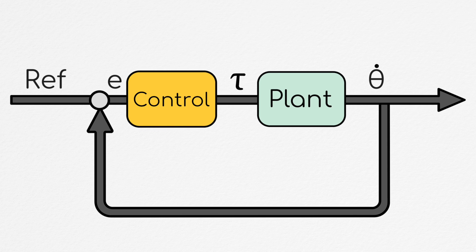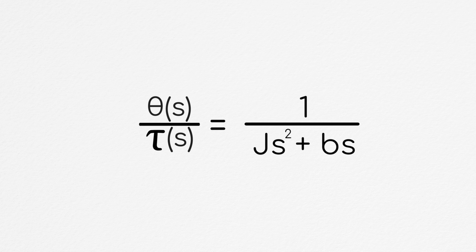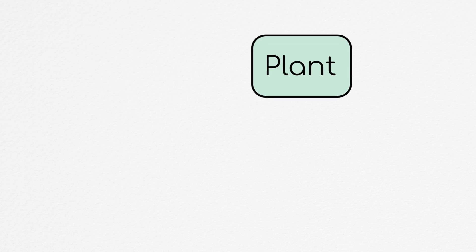However, if instead of position we wanted to control the system's velocity, our motor model would change. Where before, our system model was 1 over j*s squared plus b times s, it is now 1 over j*s plus b. If we were to use a PD controller on this new system, we have a couple of issues.